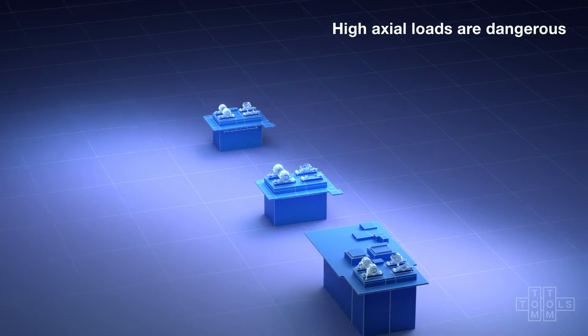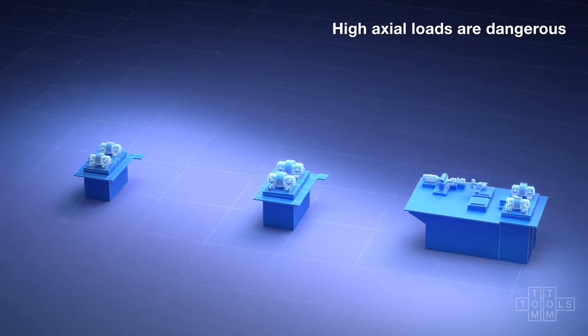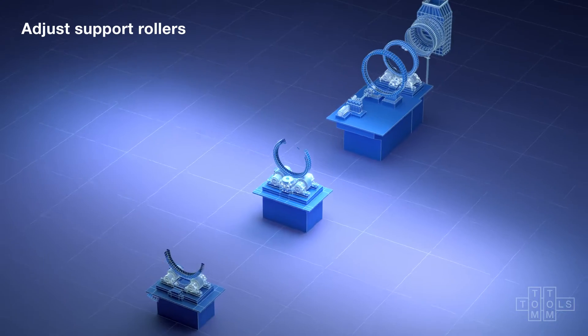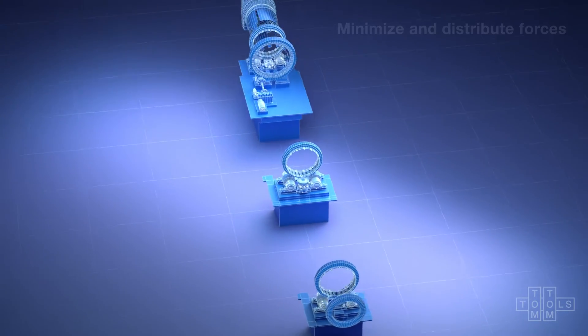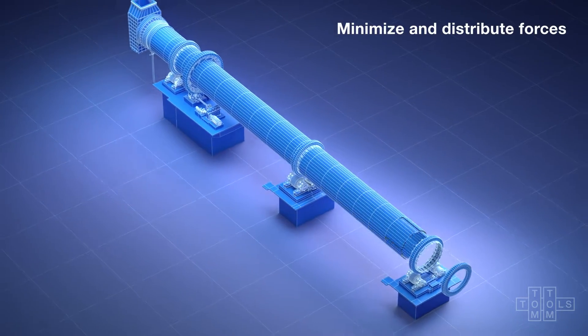High axial loads are dangerous because they damage the bearings. Therefore, it is important to adjust the support roller so that the axial forces are small and evenly distributed among the support rollers.